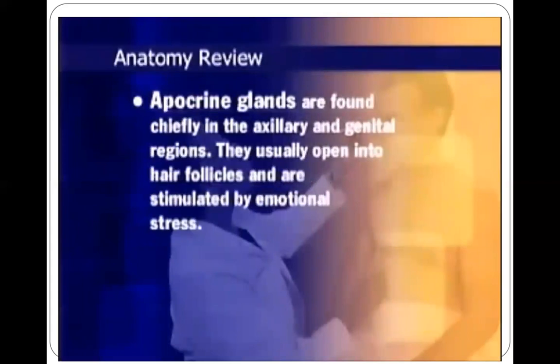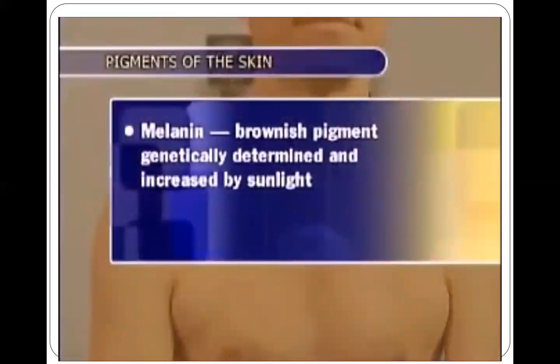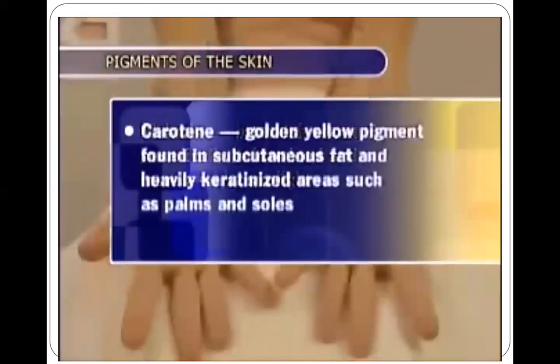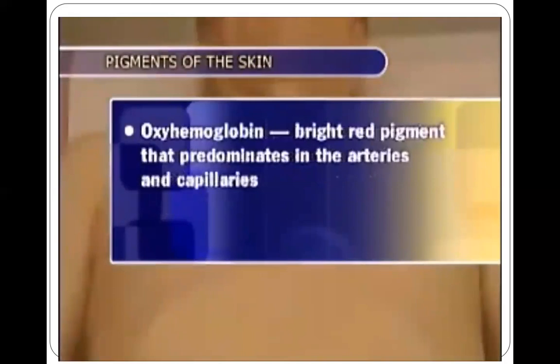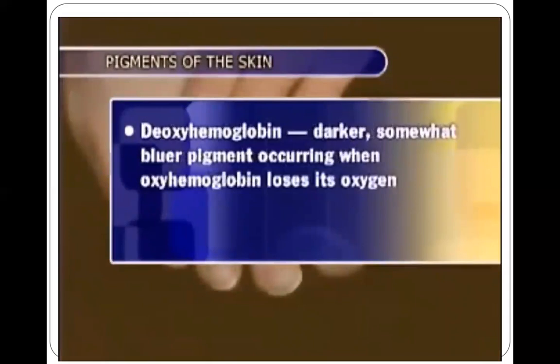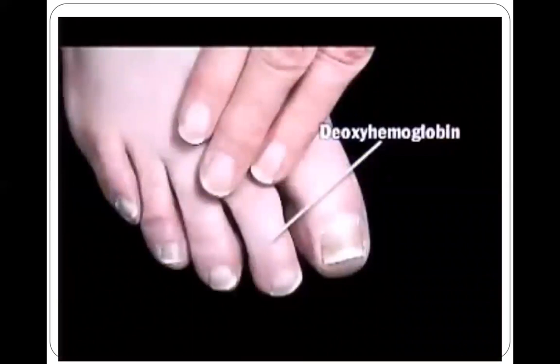Sebaceous glands produce a fatty substance secreted through hair follicles and are present on all skin surfaces except the palms and soles. Sweat glands are of two types: eccrine glands, widely distributed and opening directly onto the skin surface to help control body temperature; and apocrine glands, found chiefly in the axillary and genital regions, usually opening into hair follicles and stimulated by emotional stress. Skin color depends on four pigments: melanin, carotene, oxyhemoglobin, and deoxyhemoglobin. Increased deoxyhemoglobin gives the skin a bluish cast known as cyanosis.